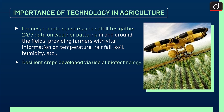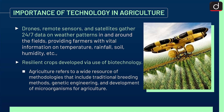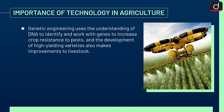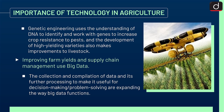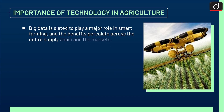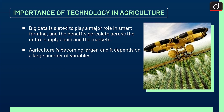Resilient crops are developed via biotechnology, which refers to methodologies including traditional breeding methods, genetic engineering, and development of microorganisms for agriculture. Genetic engineering uses the understanding of DNA to identify and work with genes to increase crop resistance to pests and develop high-yielding varieties, and also makes improvements to livestock. Big data is also playing a major role in improving farm yields and supply chain management — its collection, compilation, and processing supports decision-making, and is slated to play a major role in smart farming across the entire supply chain and markets.